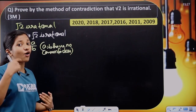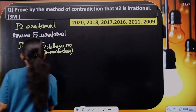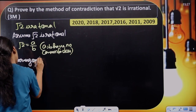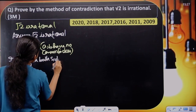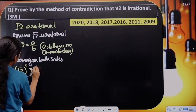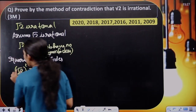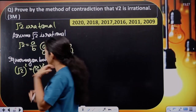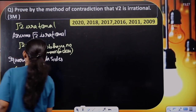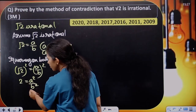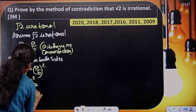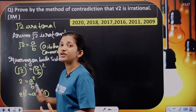Next step is squaring on both sides. So Root 2 whole square equals A by B whole square. Root 2 whole square is 2, so 2 equals A squared by B squared. Then next step: 2 into B squared equals A squared. So 2B squared equals A squared. This is equation number 1.